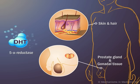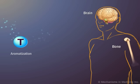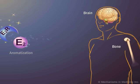In bone and brain, testosterone is converted by aromatization to estradiol, or E2, which binds the estrogen receptor, E2R, to carry out its effects.